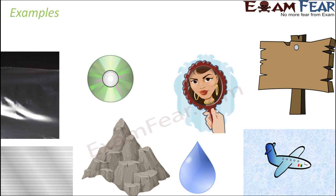Let's classify some examples as transparent, translucent, or opaque. Air is transparent — that is why we can see everything around us; if air were opaque we would see nothing. Clean water is also transparent. Rock is opaque — if a large piece of rock is present, you cannot see what is on the other side.